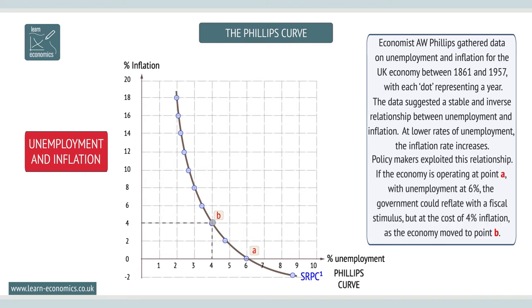Policymakers were quick to exploit the curve. If the economy was operating at point A, with unemployment troublingly high at 6%, the government would pump up demand with a fiscal stimulus. It could then predict that, sometime later, inflation would rise — in the graph, to 4% — as the economy moved to point B.